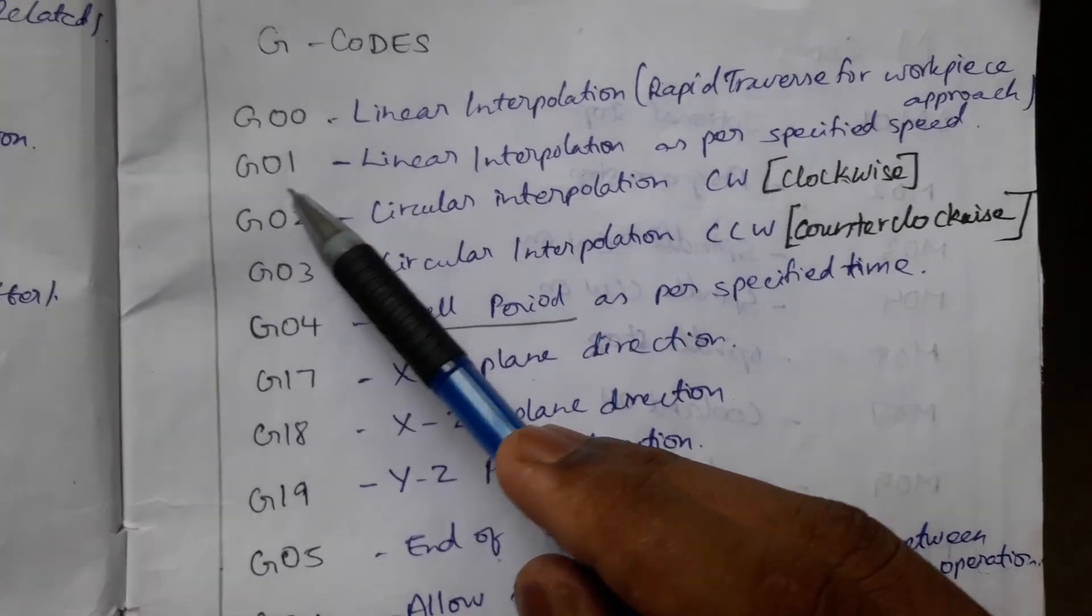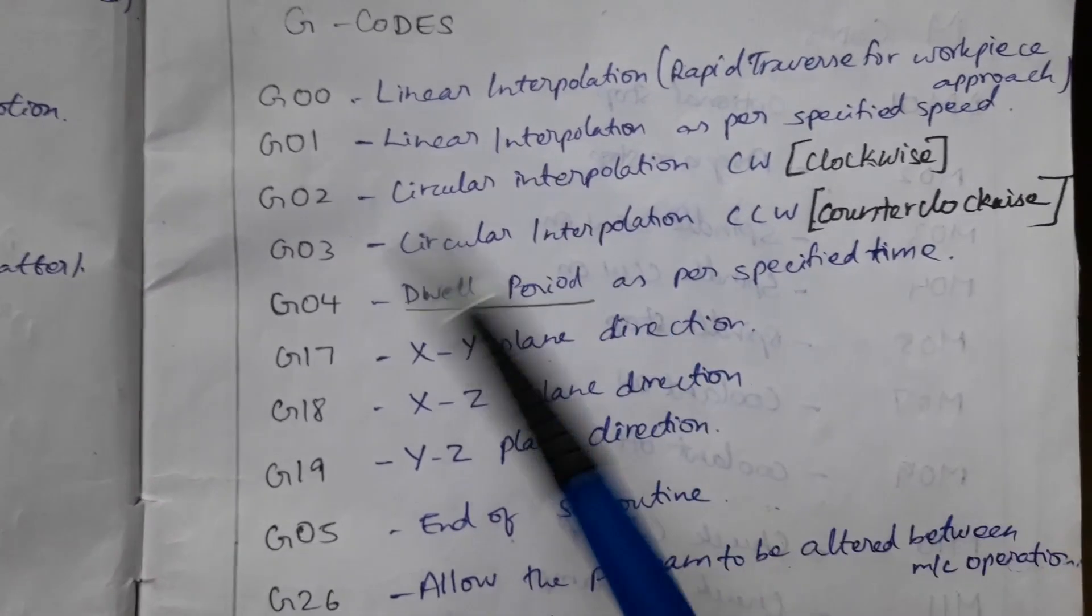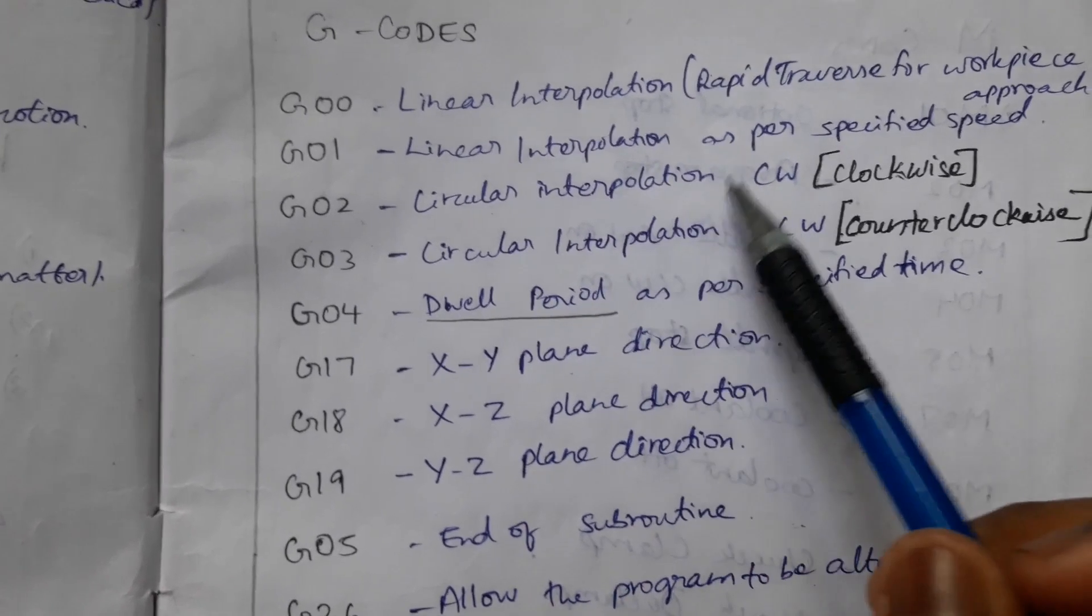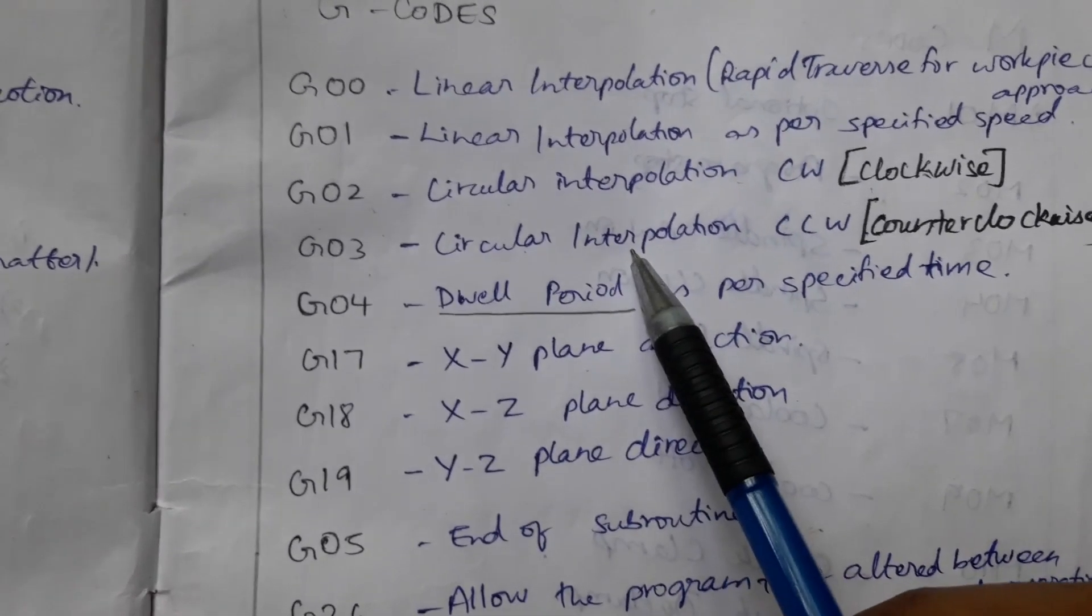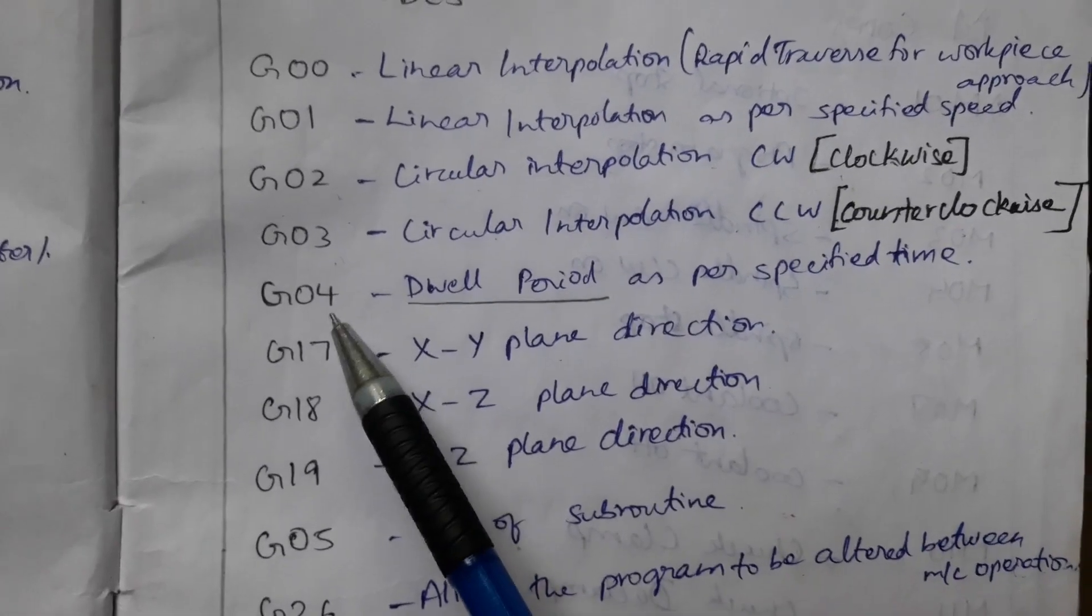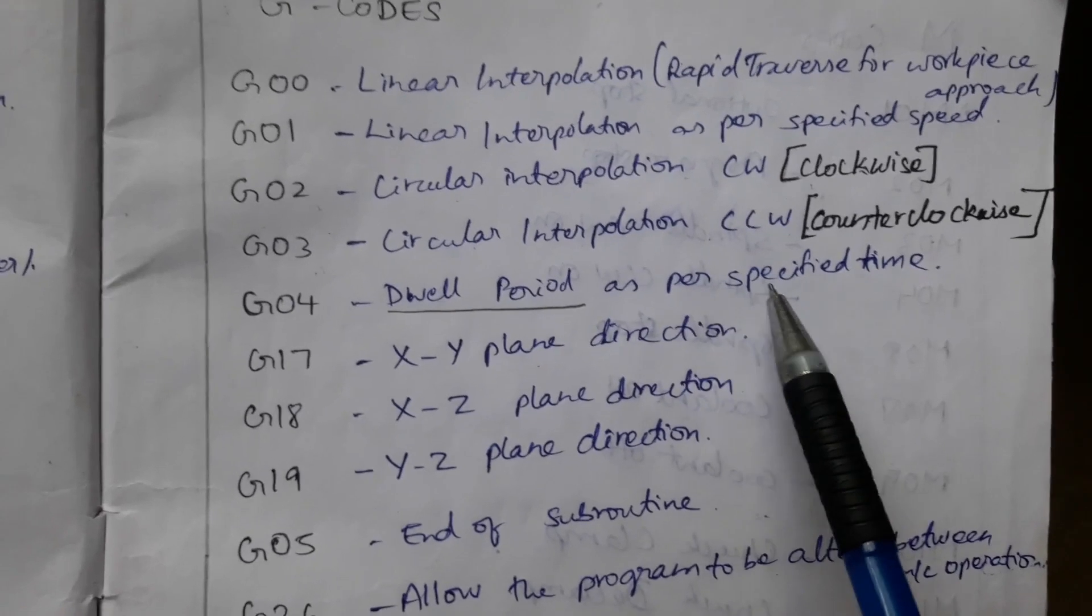If we enter the code G01, we must give the feed. G02, circular interpolation clockwise. G03 for circular interpolation counterclockwise or anti-clockwise. G04, dwell point, dwell period as per specified time.